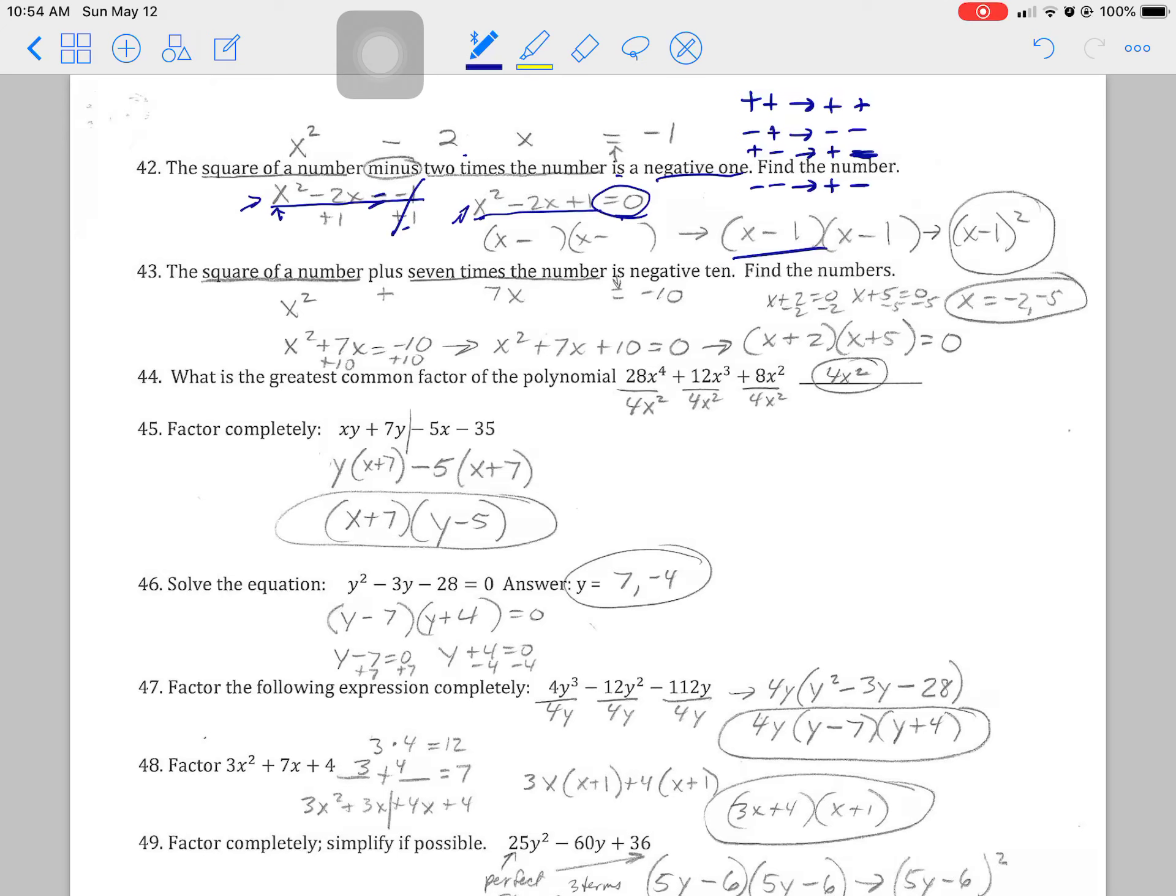Alright, last one for the review. Starting on number 43, the square of a number. The square of a number is x squared plus 7 times the number, 7x, is negative 10.